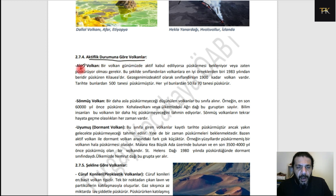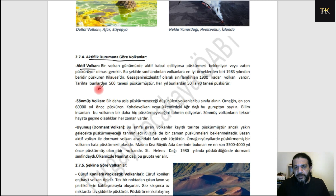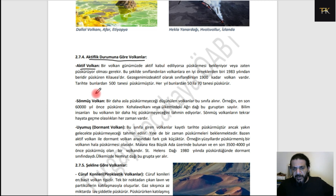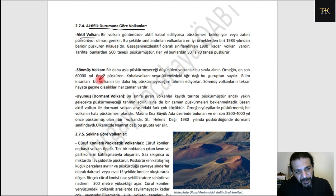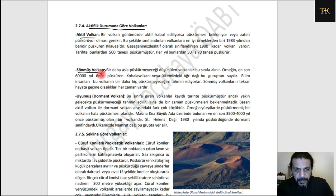Aktiflik durumuna göre volkanlar: aktif volkanları biliyoruz; dünyada çok sayıda Pasifik, İzlanda, İtalya'daki Etna, Japonya, Endonezya, Karayipler, Martinik Adası'nda aktif volkanlar var. Sönmüş volkanlar: ülkemizde çokça sönmüştür, biri hariç. O da Nemrut; Nemrut bir dormant volkandır, yani uyumuş volkandır. Bilinen yazılı tarihte kaydedilmiş bir patlaması varsa sönmüş diyemiyoruz, uyumuş diyoruz. Osmanlı döneminde Nemrut'un aktivitesi biliniyordu; dolayısıyla Nemrut bizim için uyumuş bir volkandır.